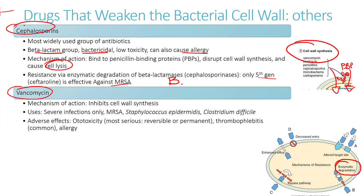Vancomycin is another drug that weakens the cell wall by inhibiting cell wall synthesis, and it is only active against actively growing and rapidly dividing cells. Vancomycin is kept in reserve for severe infections, MRSA, Staphylococcus epidermidis, and Clostridium difficile. Adverse effects include ototoxicity — the most serious — which can be reversible or permanent, as well as thrombophlebitis and allergic reactions.